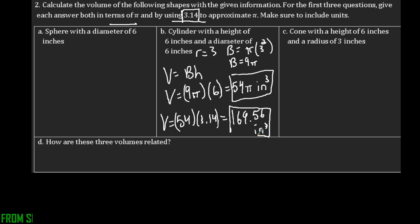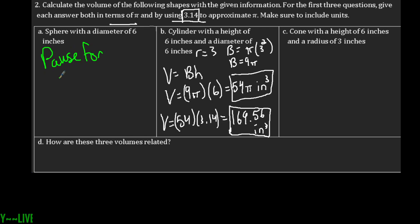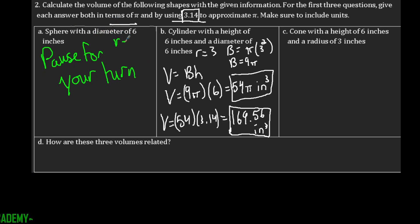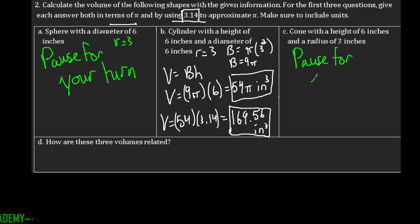Pause for your turn. Solve for the sphere that has a diameter of 6 (so radius is 3), and solve for the cone — pause the video to try those on your own.